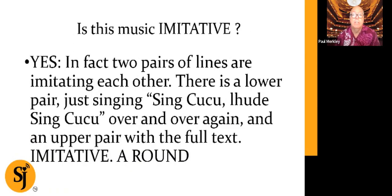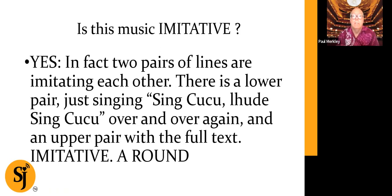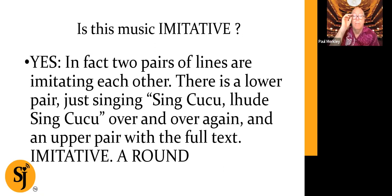All right. Is it imitative? Yes, we've just explained why. We've got two pairs of lines. Some of you may know this and may say, Paul, I call this the Reading Rota. That's true, that's another name for it. A rota just means a round — Latin for round. And Reading? Because the manuscript was found in the city of Reading. And if you didn't hear the imitation clearly, don't worry — we've got two more examples coming.